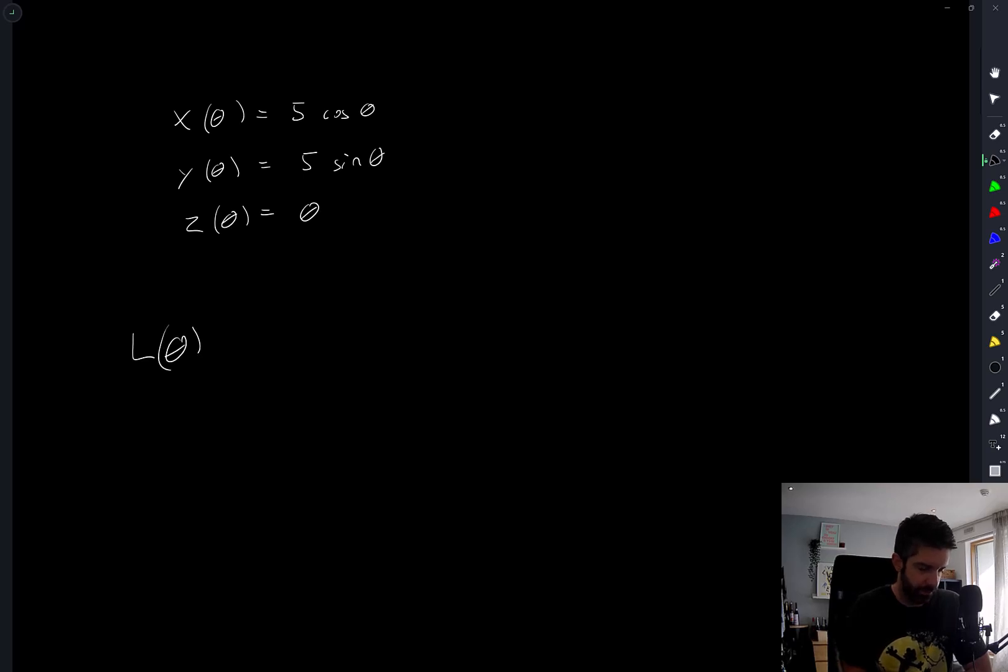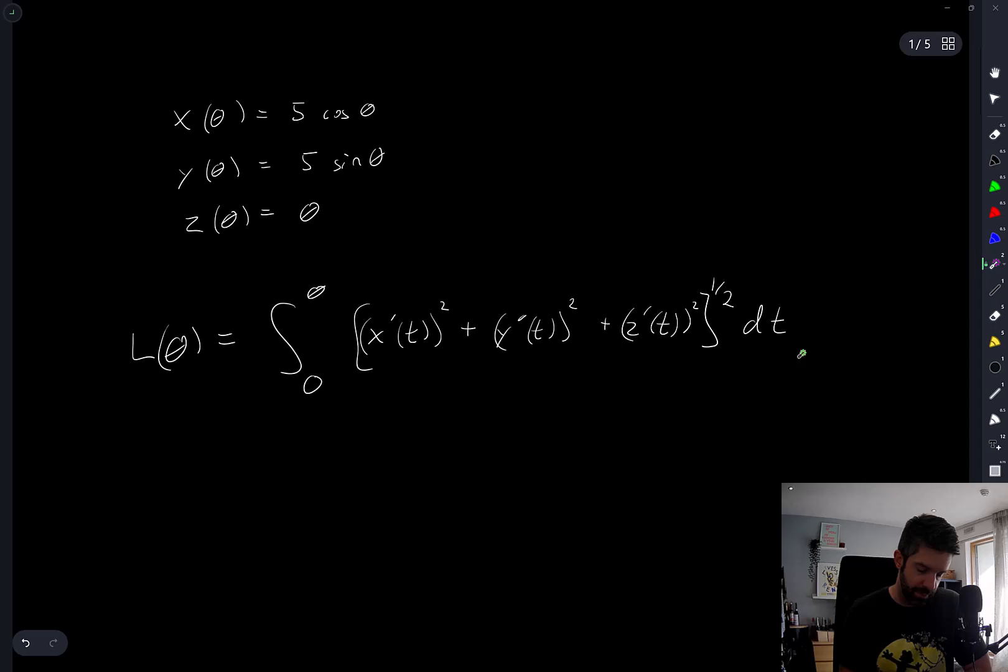So the arc length for a parametric curve, this is going to be integral from 0 to theta of X prime T squared plus Y prime T squared plus Z prime T squared all square root DT. If I think of T as time, then this under the square root is the speed of the particle.